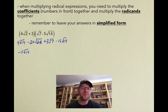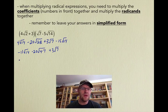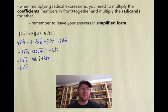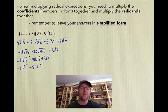28 can be written as 4 times 7, so we can simplify that. Taking the square root of 4 gives 2, and we multiply it by the number out in front. So that's negative 40√7 plus 3√7, which gives us negative 11√14 minus 37√7. And that is what you get when you multiply those two binomials together.